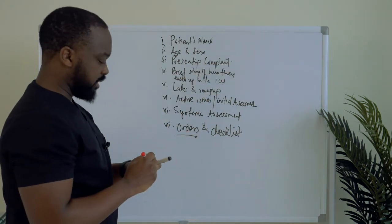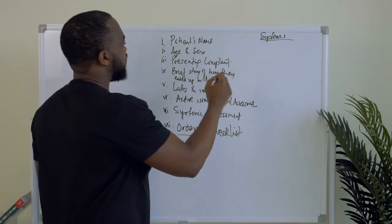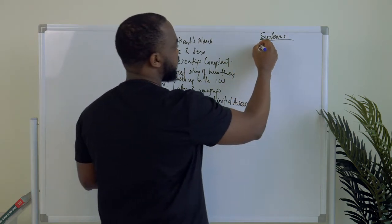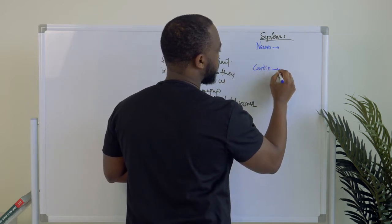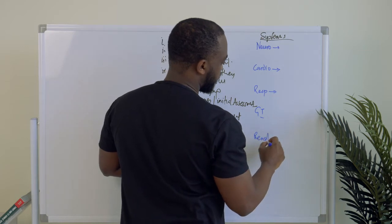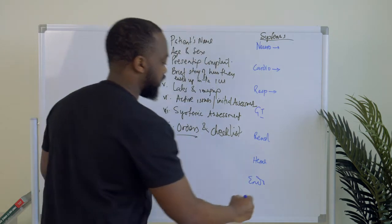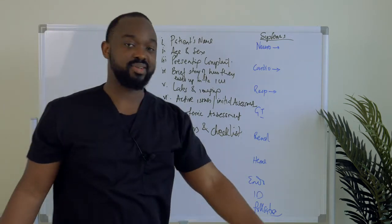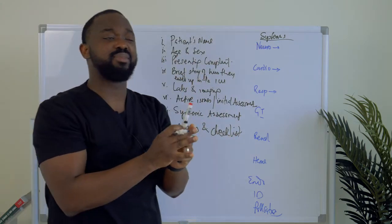So let's look at our systemic assessment. We'll list it based on the systems. We can start with neuro, then cardio, respiratory, GI, renal, heme, endo, ID, and finally palliative. I always include palliative — although it's obviously not an organ system — but these are the important sections of patient care that you want to make sure you have a proper assessment and proper plan for.